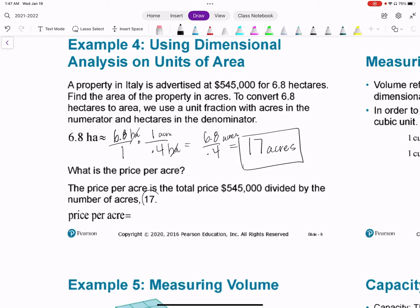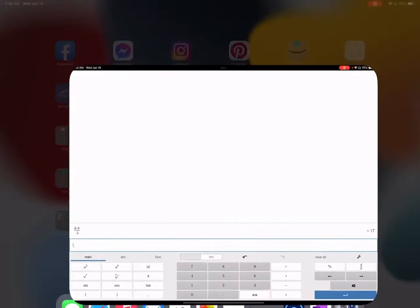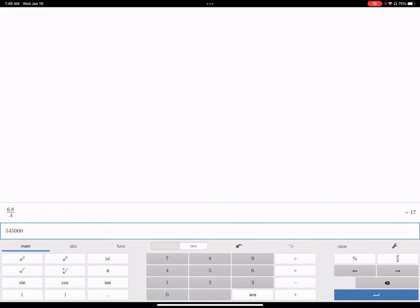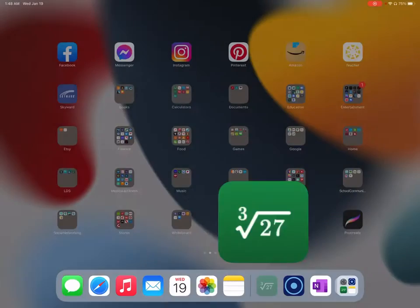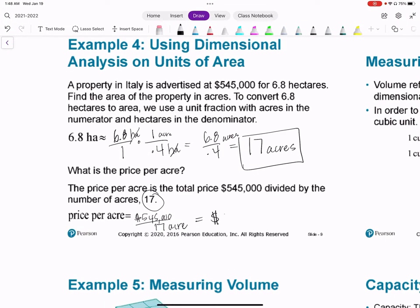Then it says price per acre, so that means you want to divide. 545,000 divided by 17 acres. In the calculator, 545,223 divided by 17 equals 32,058.82 cents. But if we're rounding that to the dollar it would be 32,059 dollars per acre.